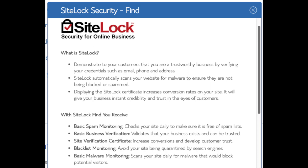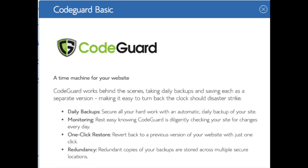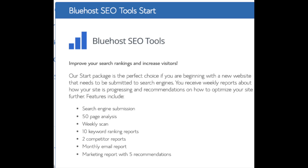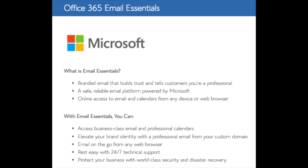SiteLock Security is security for your WordPress website that protects it from hackers — I'd unselect this as there are really good free alternatives. CodeGuard creates daily backups and allows you to restore your site with a click of a button — there are free alternatives that work just the same. SEO Tools Start you can keep unselected, as submitting your site to search engines you can do for free. Office 365 Email Essentials is Microsoft Outlook email software — if you'd like email powered by this addon feel free to keep it selected, but it isn't necessary. All of these addons are completely optional.